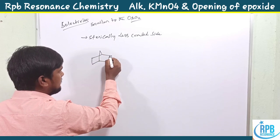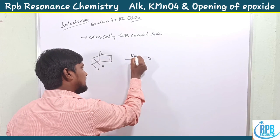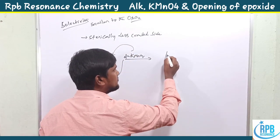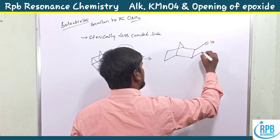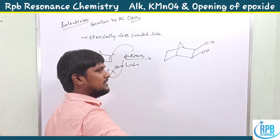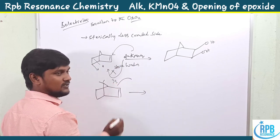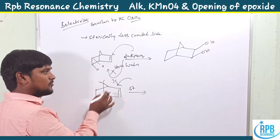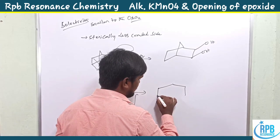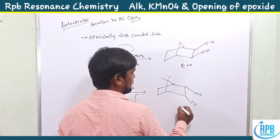For example, with norbornene — which has strain with the bottom hydrogen — the double bond is strained with the bottom hydrogen. Alkaline KMnO4 cannot attack the bottom of the plane due to steric hindrance, so it attacks from the top position, giving top-face diols. Due to steric hindrance on the bottom side, the diol forms on the top (exo) face.